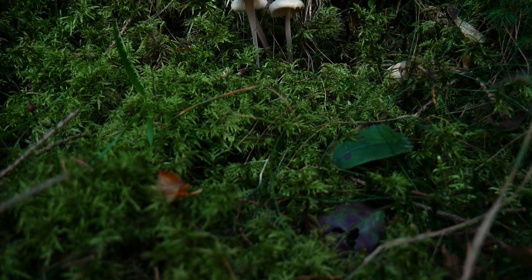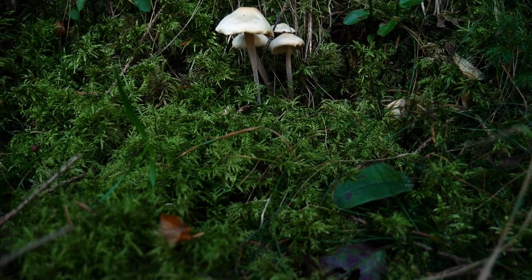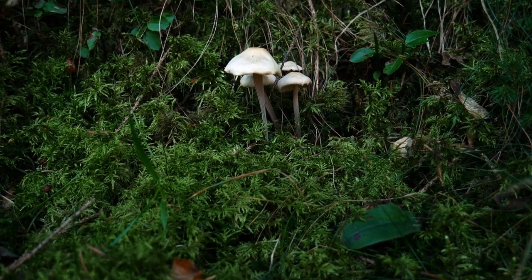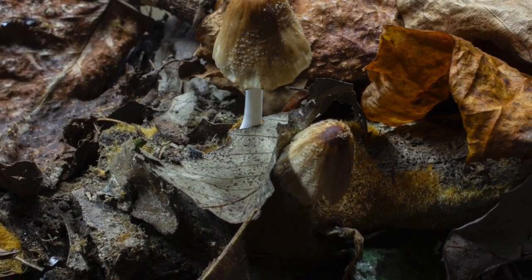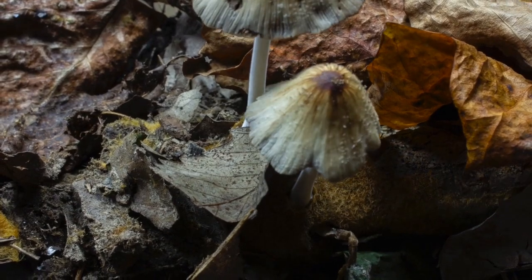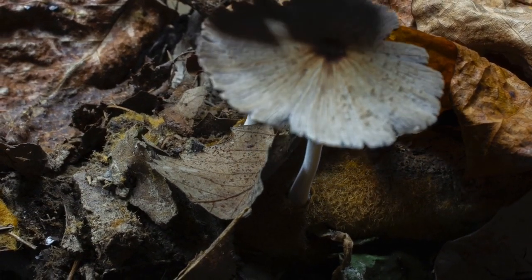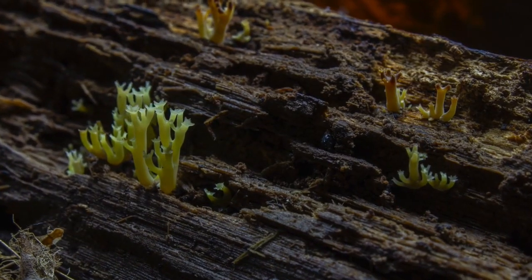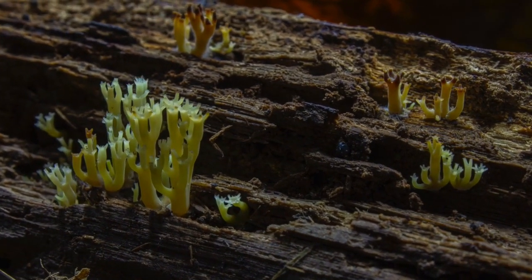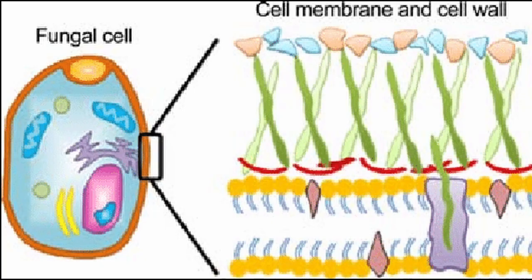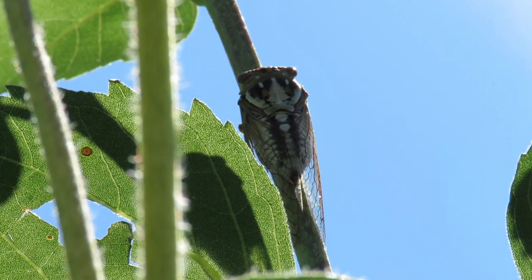Fungi are like protists — they can be unicellular or multicellular, and they can reproduce sexually, asexually, or both. But this is where the similarities end. Fungi are heterotrophic, non-photosynthetic organisms that absorb their nutrients from their environment. They secrete enzymes into their food, then absorb the digestive material through their cell walls. Their cell walls are composed of chitin, a polymer that also makes up the exoskeletons of insects and crustaceans.